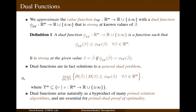A dual function is strong at a given right-hand side vector if its value matches with that of the value function at that right-hand side vector. In fact, dual functions are solutions to a so-called general dual problem defined here. It is a maximization problem over the space of functions defined by the set epsilon_m. By restricting this set epsilon_m to specific classes of functions such as linear, sub-additive, etc., we can reduce this general dual problem to well-known dual optimization problems in the literature for specific problem classes.